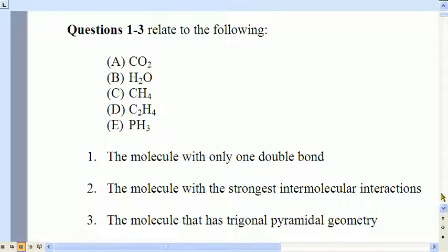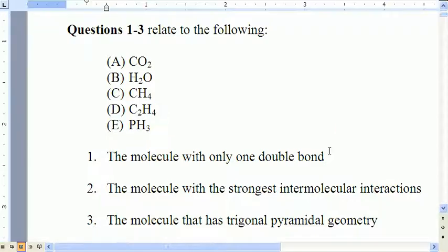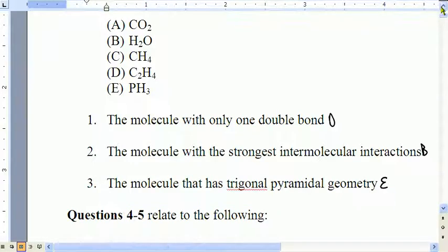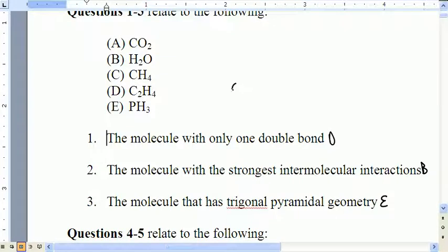The molecule with only one double bond, that's going to be D. The molecule with the strongest intermolecular attractions, that's going to be B. The molecule with trigonal pyramidal geometry, that's going to be E. Let's go back and look at why. D has a structure like that. There is the one double bond for D. Oxygen has two hydrogen bonds, and because there's nobody ionic, it's going to have the strongest intermolecular attractions. And the Lewis structure for PH3 looks like that at the central atom. That's the trigonal pyramidal geometry.